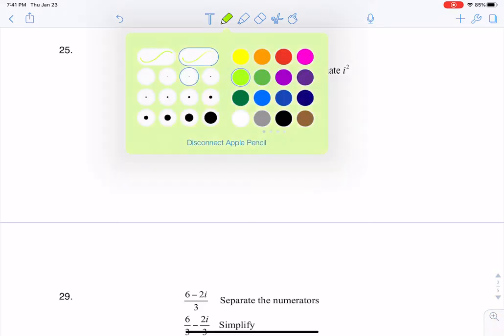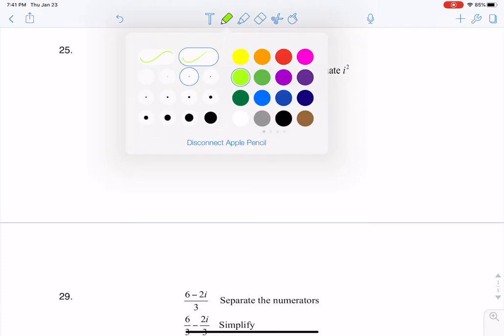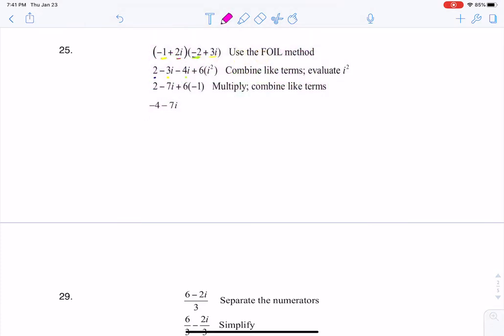If I want to do inner, I'm going to do 2i times negative 2, which is where the negative 4i comes from. And then if I want to do last, I'm going to do 2i times 3i, which is where the 6i squared comes from.